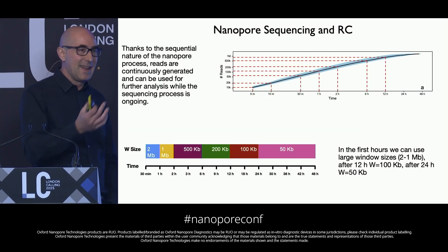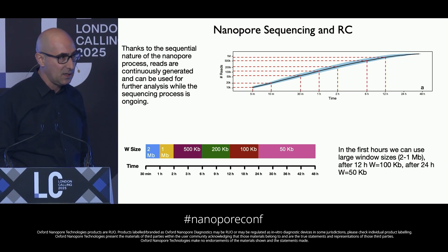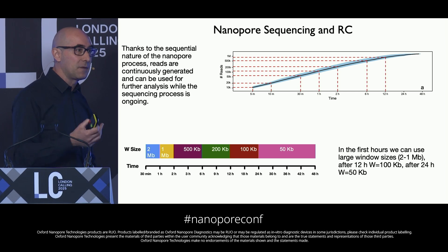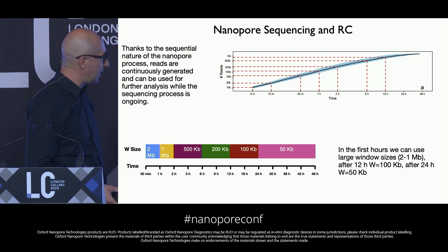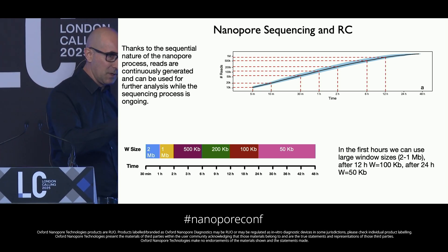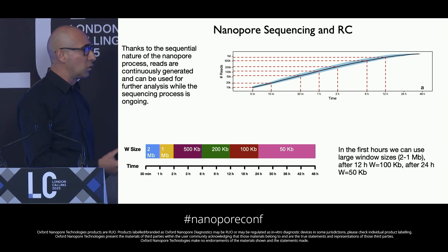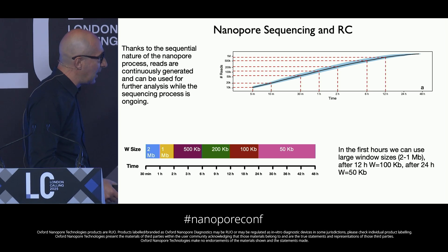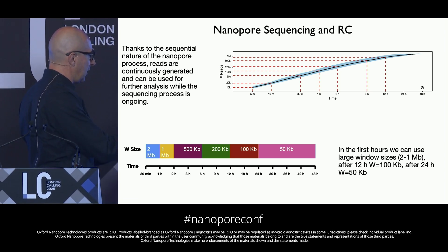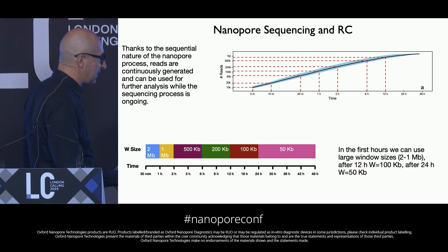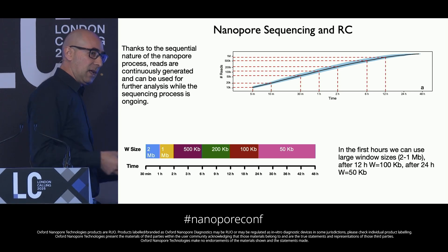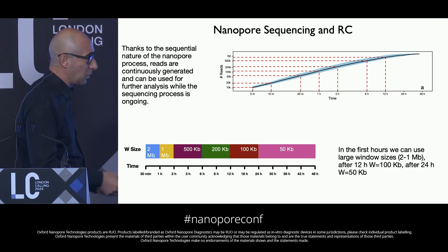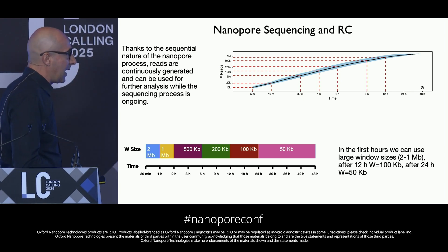Thanks to the sequential nature of nanopore sequencing, reads can be used just a few minutes after the beginning of the run. Three years ago, in a paper published in the Journal of Molecular Diagnostics, we demonstrated that reads generated by nanopore sequencing can be exploited for a read-count approach to identify copy number variants. With reads generated in the first few hours, we could use window sizes of 1–2 megabase pairs, and after 24 hours of sequencing, window sizes of 50 kilobase pairs — increasing resolution.